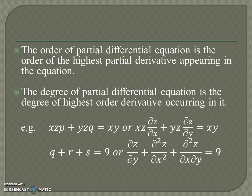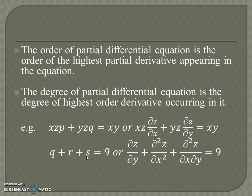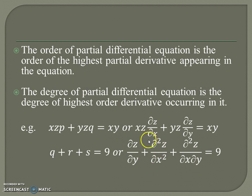The order of a partial differential equation is the order of the highest derivative in the equation, and the degree is the degree of that highest order derivative. For example, xz·p + yz·q = xy contains only p and q, so it is a PDE of order one. But an equation containing r, s, or t is of order two, since r = ∂²z/∂x². Its degree is one because the highest derivative appears to the first power — so it is a PDE of order two and degree one.